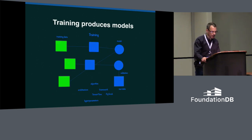Training produces models. We must now track what architectures were used. What learning algorithms? What frameworks? TensorFlow, PyTorch? With what libraries and what versions of these libraries? And this is before we even get to hyperparameters.